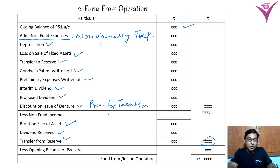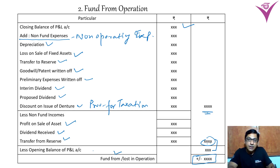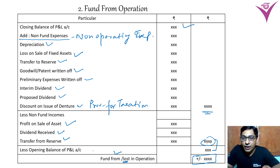The opening balance of the P&L account will be added or subtracted. When these amounts are calculated and the result comes to plus, then it is fund from operations. If it comes to minus, then it is loss from operations.